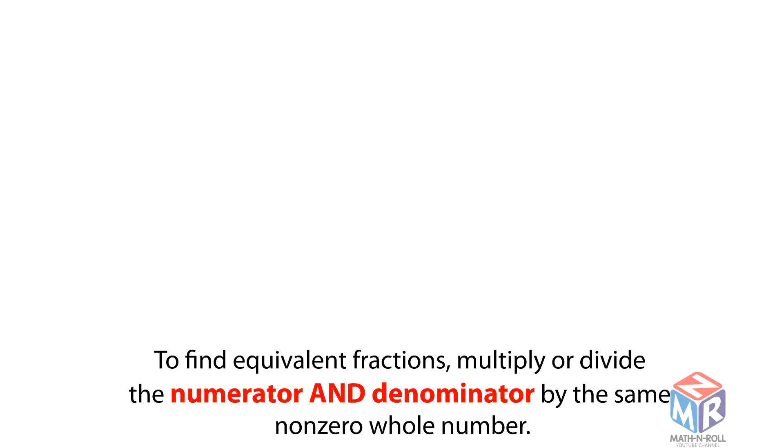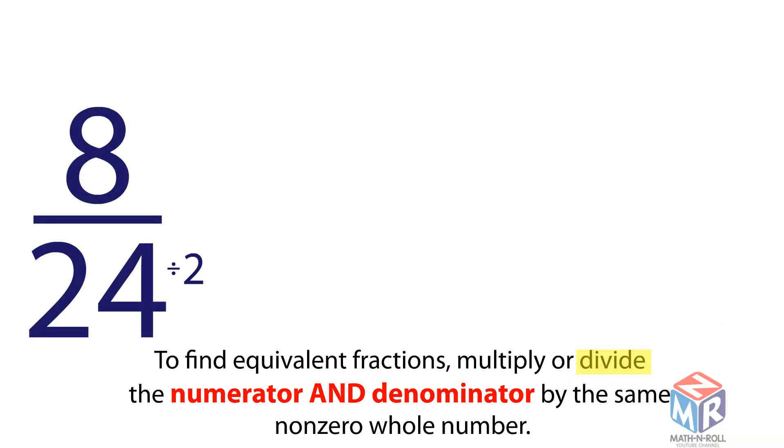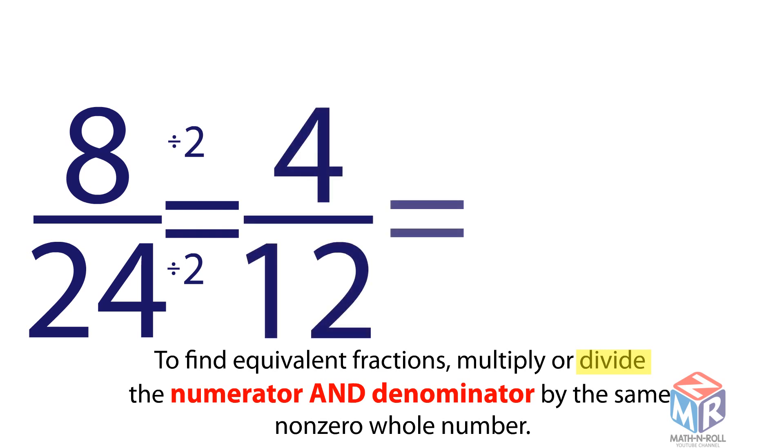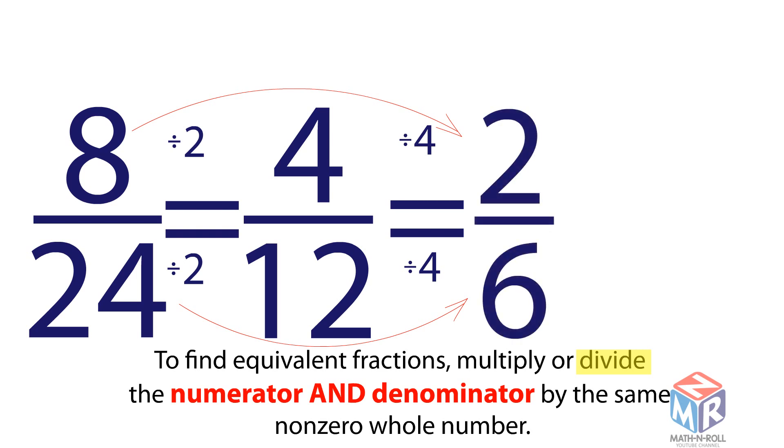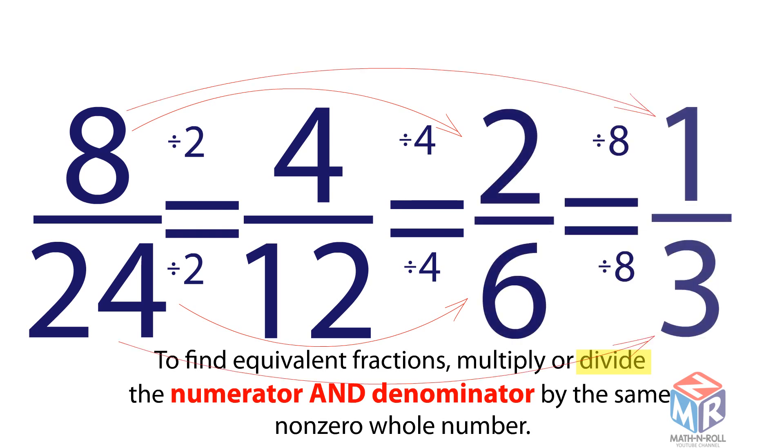Let's take a look at division to find equivalent fractions. We have 8 over 24. To get 4 twelfths, we divide both the numerator and the denominator by 2. To get 2 sixths, we divide both the numerator and the denominator by 4. And to get 1 third, we divide both the numerator and the denominator by 8.